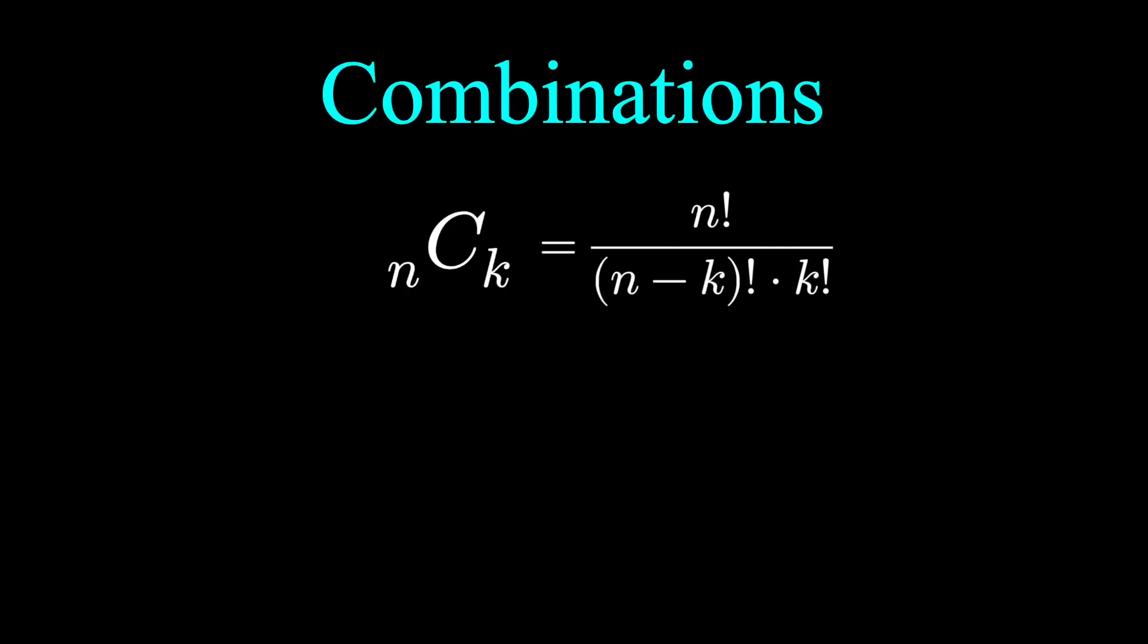What if we select all n objects from the n objects? Think about taking all 52 cards from a deck of 52. The combination tells us how many ways to do that. Well, there's only one. You take every card. But here's the formula. If we substitute in n and n into the formula, in the denominator, we're going to get a 0 factorial. Yet this equation has to be 1. We have to conclude 0 factorial is 1.